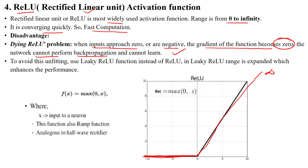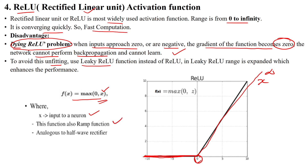This is called the dying ReLU problem. To avoid this, we can use another activation function called leaky ReLU, which solves the dying ReLU problem. The function is f(x) = max(0, x), taking the maximum value between 0 and x, where x is the input to the neuron. This function is also called the ramp function, which is analogous to the half-wave rectifier.